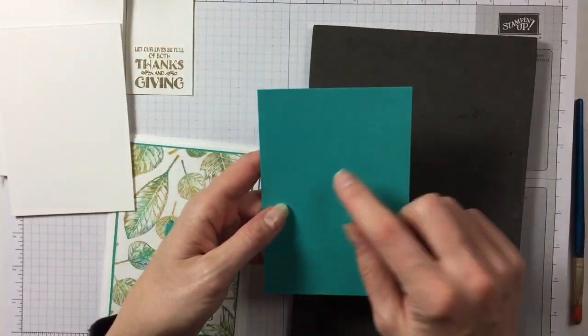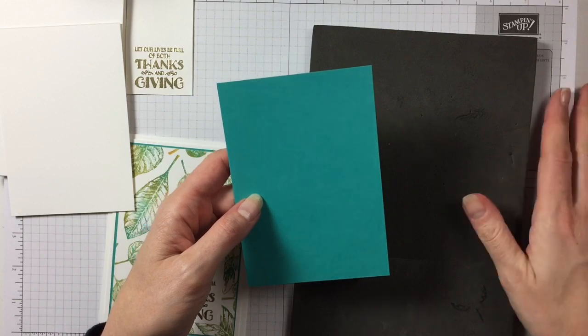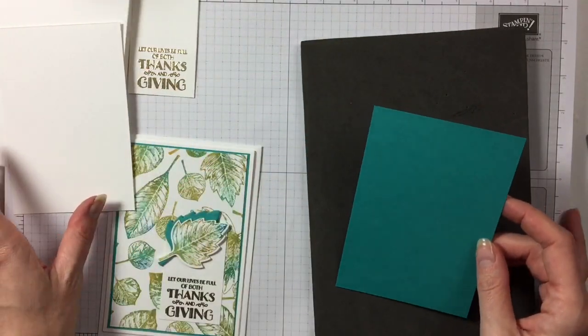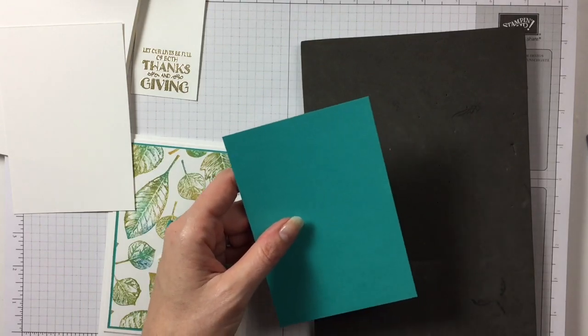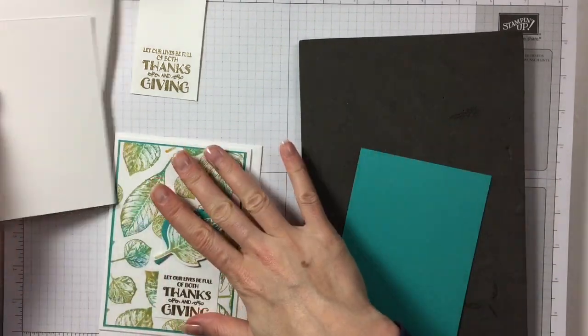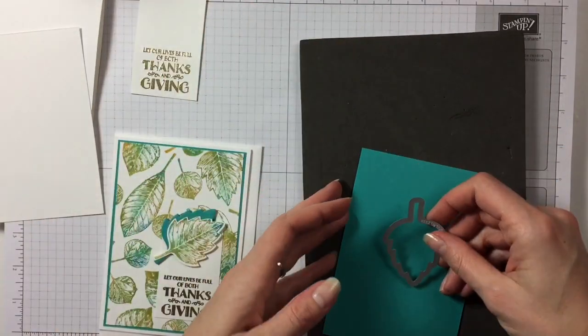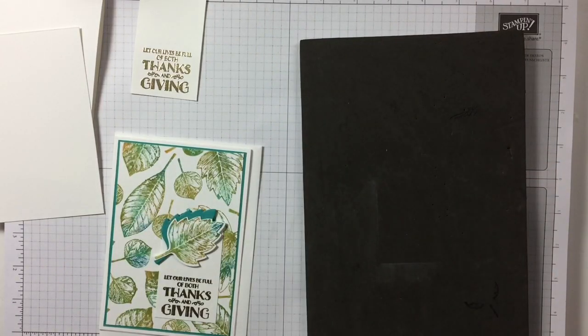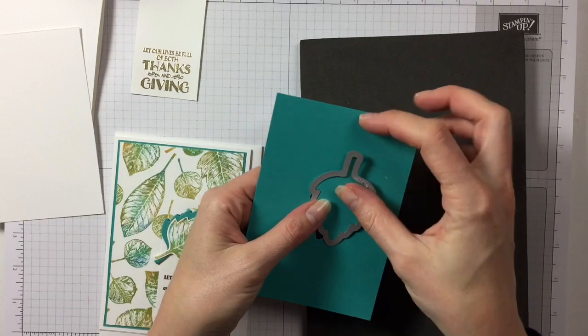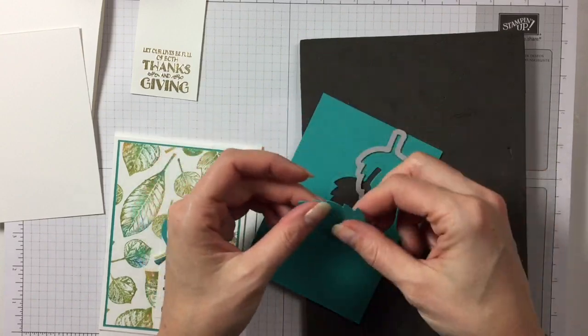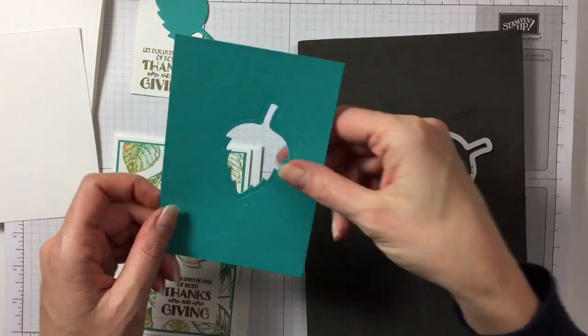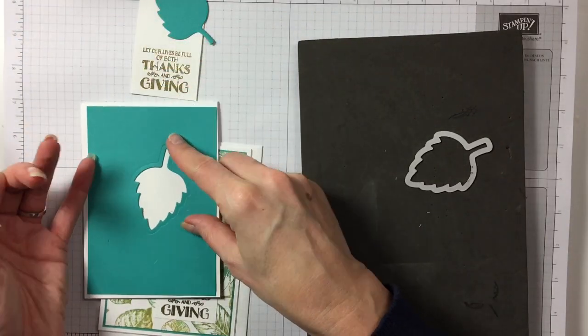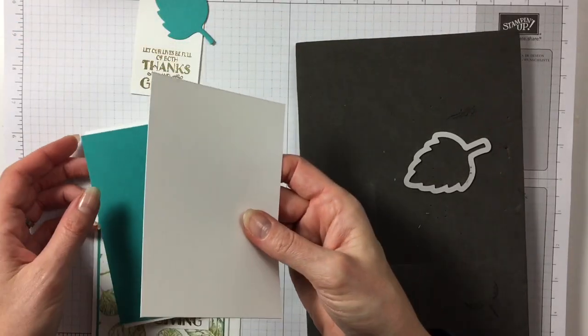And this is where I'm going to cut out my extra leaf. And I had the die here just now. And now, of course, not anymore. Oh, there. So I will cut that out. Okay. So that's been cut out. So that's ready. And that's ready to go underneath. So this is the first panel. And then we'll have the second panel on top of that.